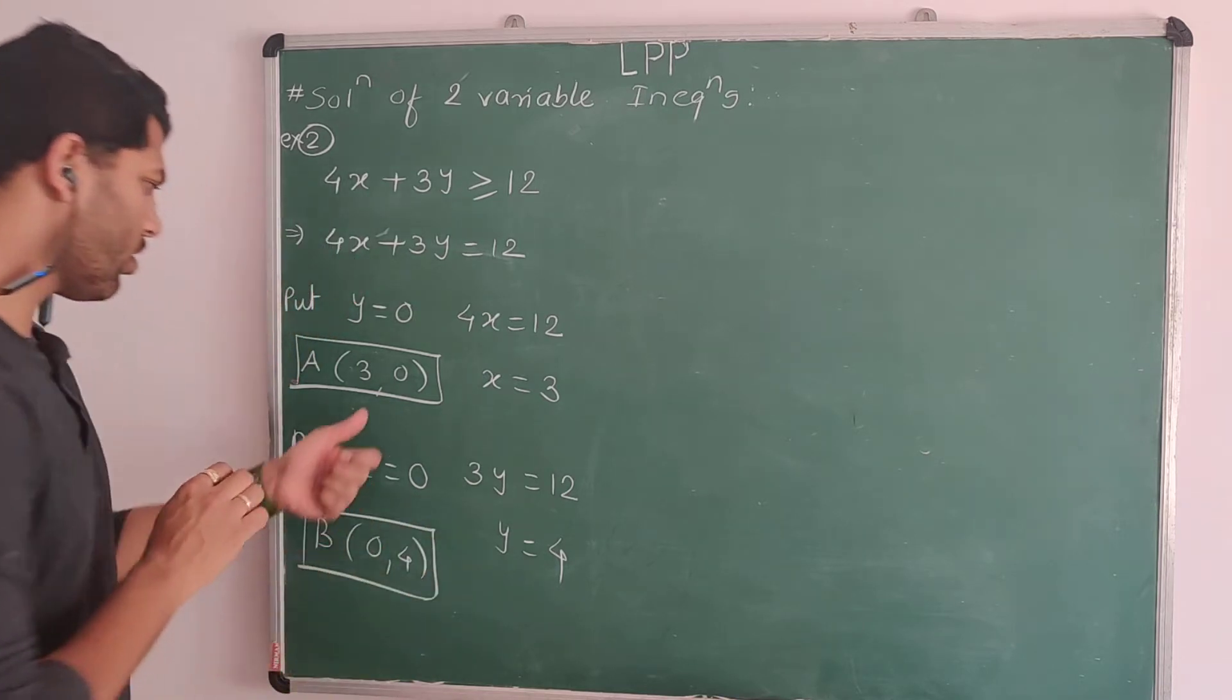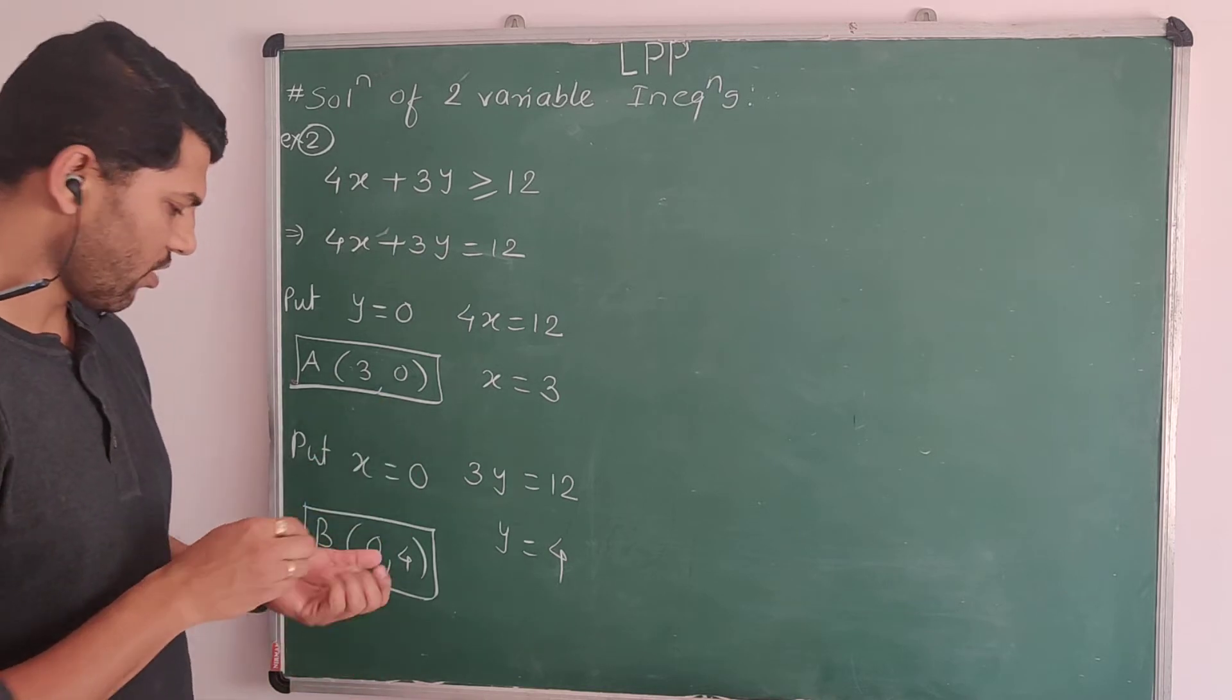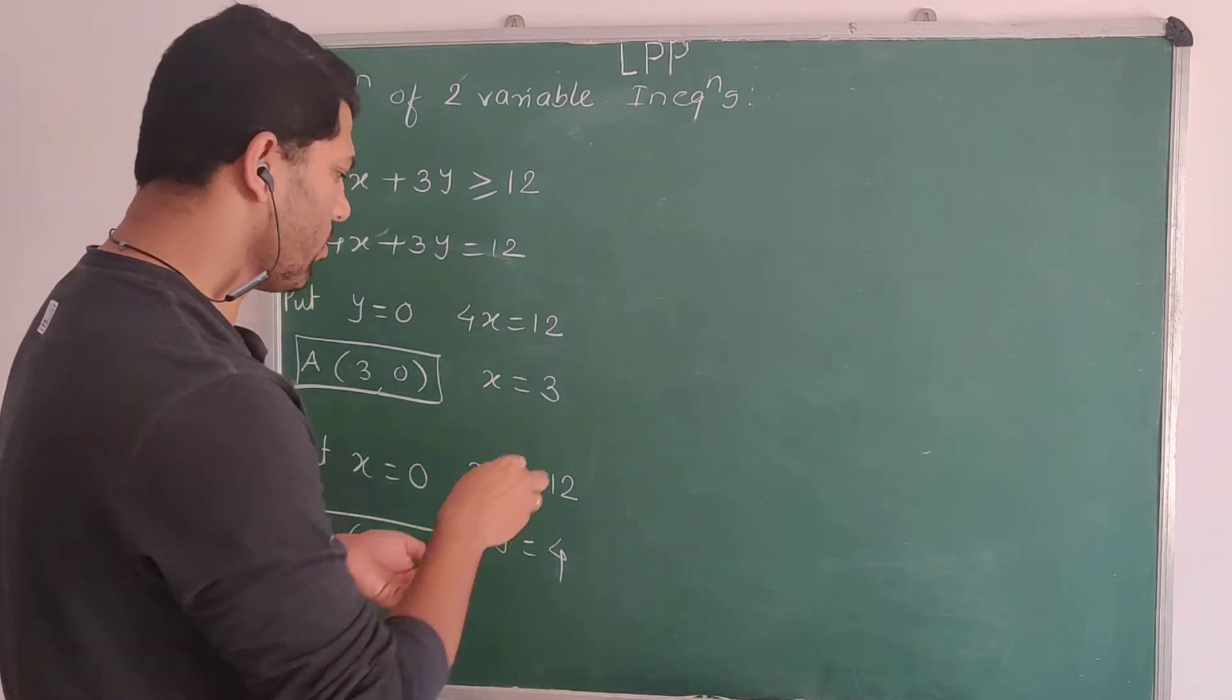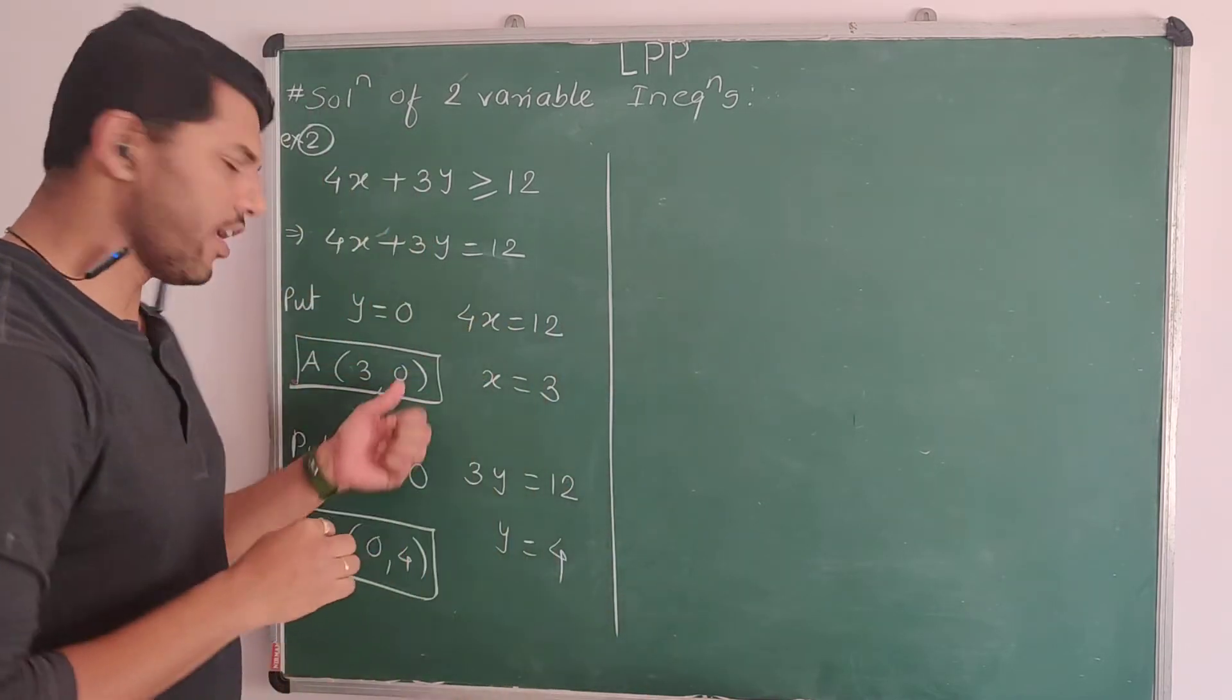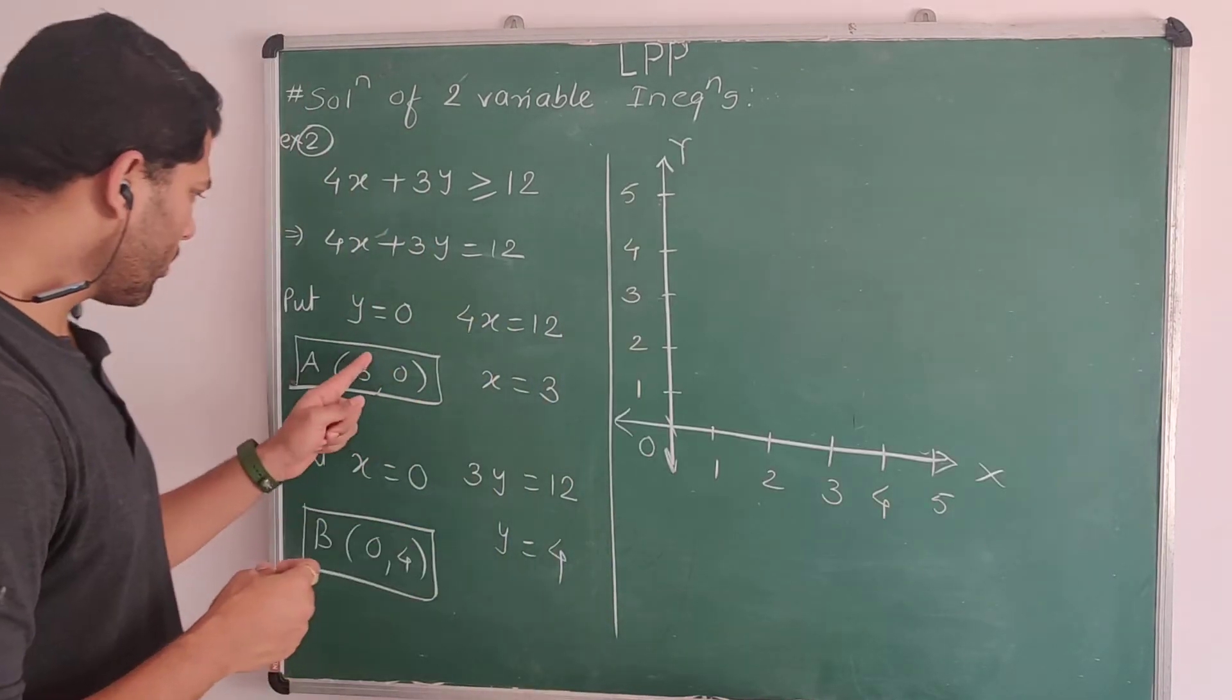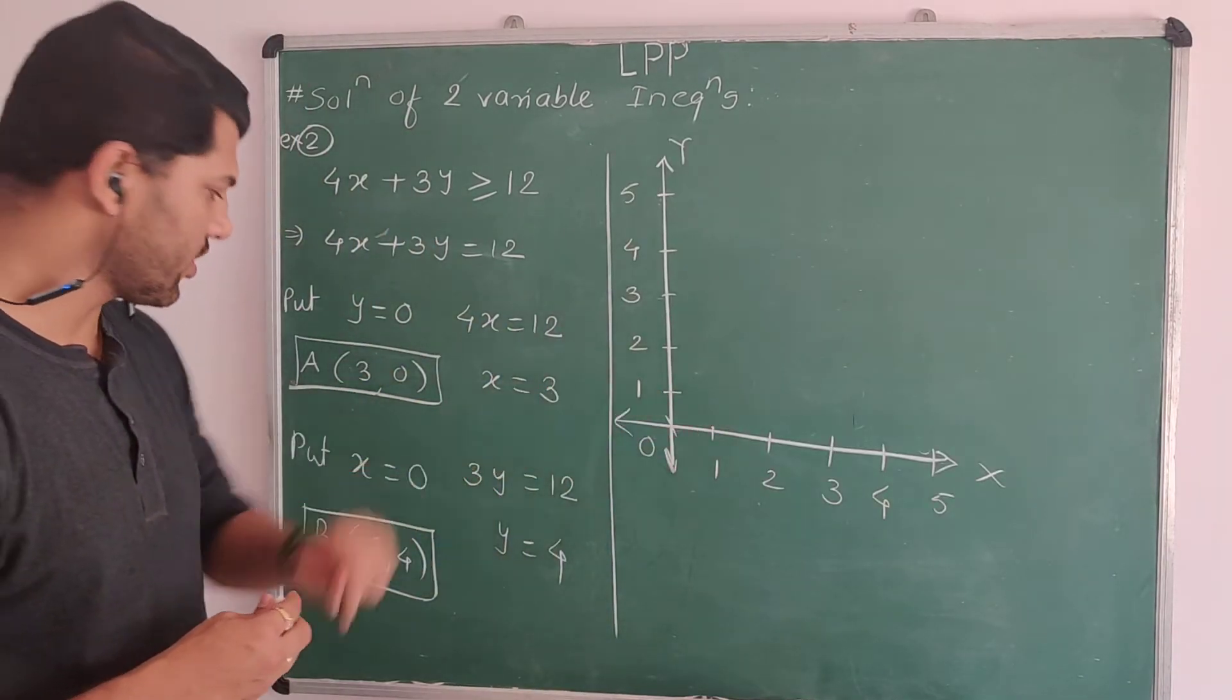Here we got two points to draw a line. Now, let's draw a line on the graph. Let's plot these two points on this graph.